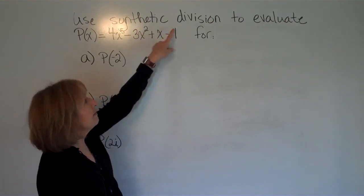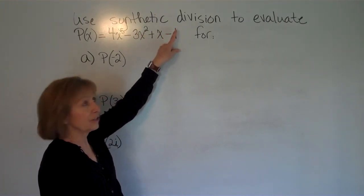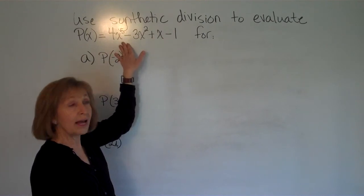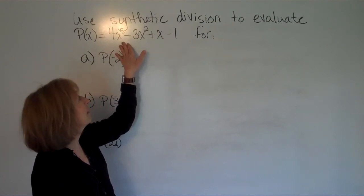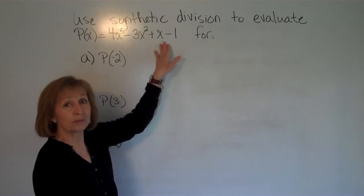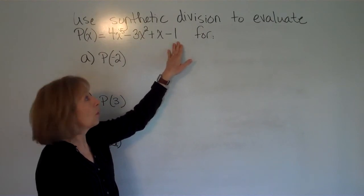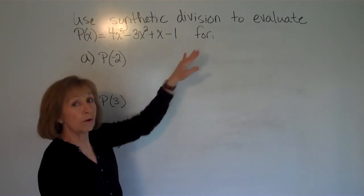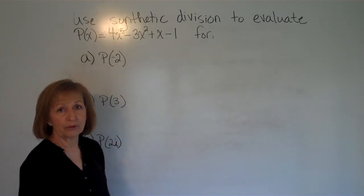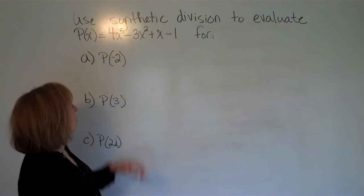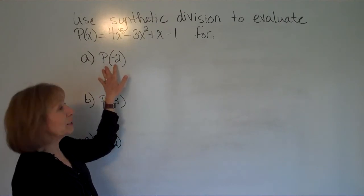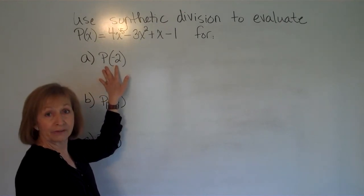Use synthetic division to evaluate P of X equal to 4X to the 5th minus 3X squared plus X minus 1, and then there are three different examples. The first one is to find P of negative 2.